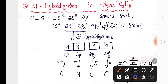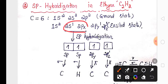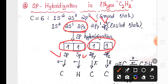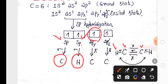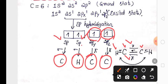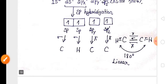In the excited state of carbon in C2H2, there are four unpaired electrons. One s orbital and one p orbital undergo sp hybridization to produce two sp hybrid orbitals, leaving two p orbitals unhybridized. Each sp hybrid orbital of one carbon overlaps axially with the other carbon to form a sigma bond, and another sp hybrid orbital overlaps with the s orbital of hydrogen. The two unhybridized p orbitals of each carbon undergo sideways overlapping to form two pi bonds. The geometry is linear with a bond angle of 180°.